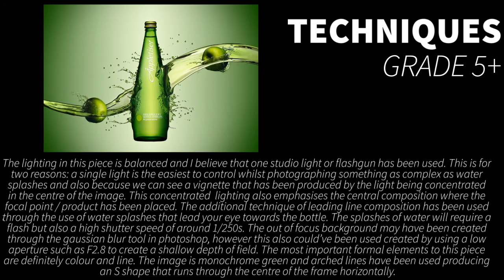The final part of the techniques box is when you talk about the formal elements. The most important formal element to this specific image is colour — we can say how this image is all different shades of green or white, and that's called a monochrome image. The other key formal element is line, because there's that big arced leading line that runs throughout it. However, we already spoke about that during composition, so there's no point repeating ourselves or talking about formal elements that aren't integral to the photographer's intent.